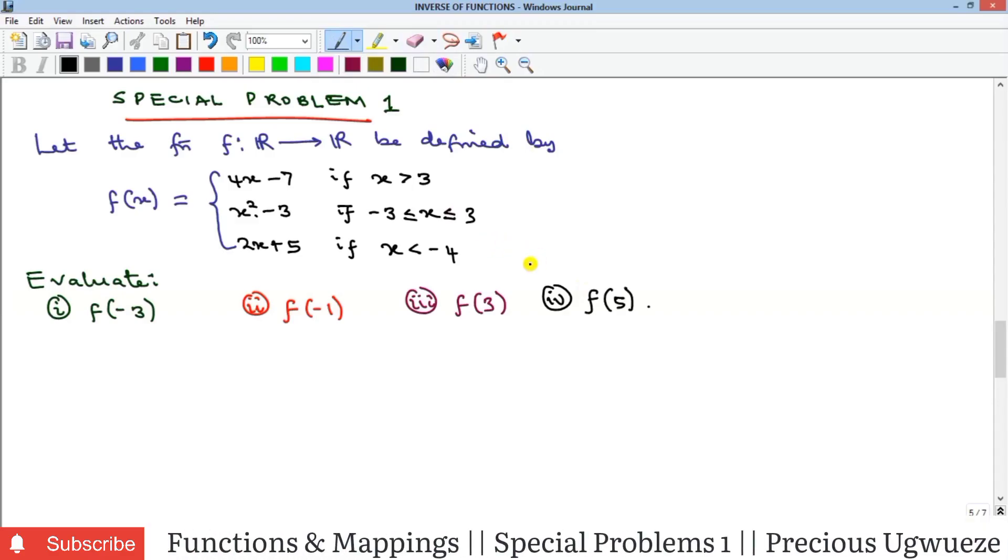All right, welcome to my YouTube channel. In the series of special problems under functions, we're going to see this first problem which says that a function f is defined this way. Now this type of function is called a piecewise function, a function that is defined to have many sub-functions. You can see here three sub-functions.